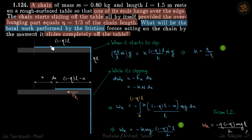We have a chain that is hanging at the edge of the table. Initially, when eta times l (where l is the total length of the chain) is hanging, it starts to slip. We need to find what is the total work performed by the friction when it completely falls off.